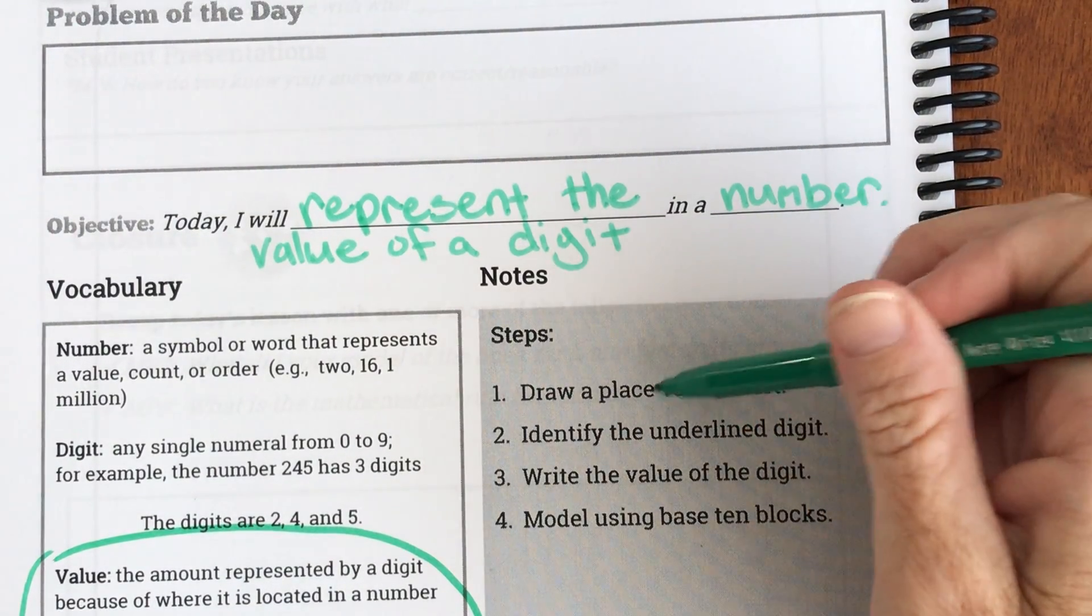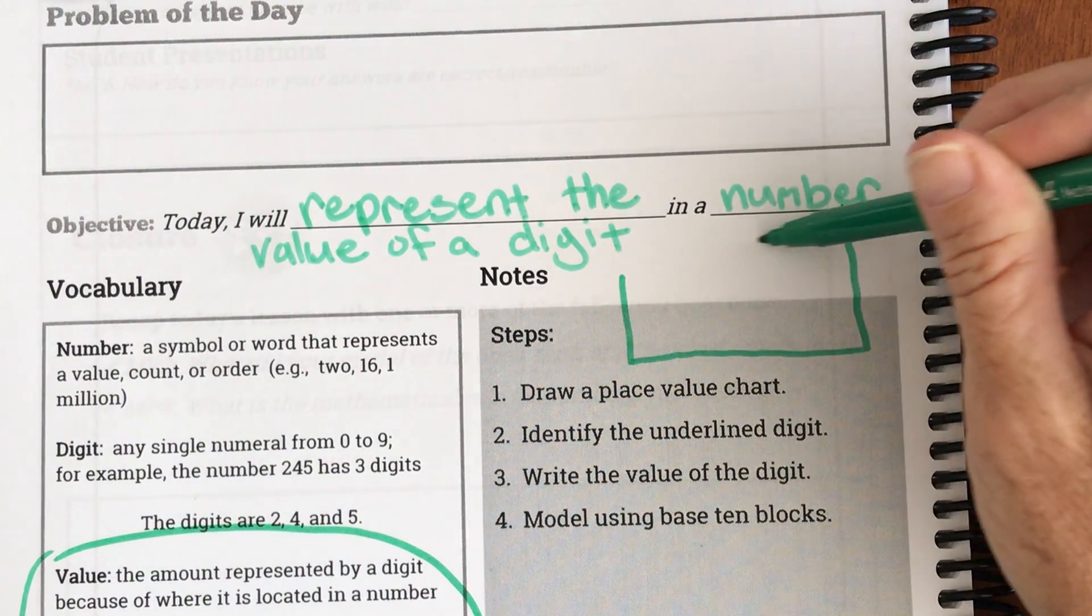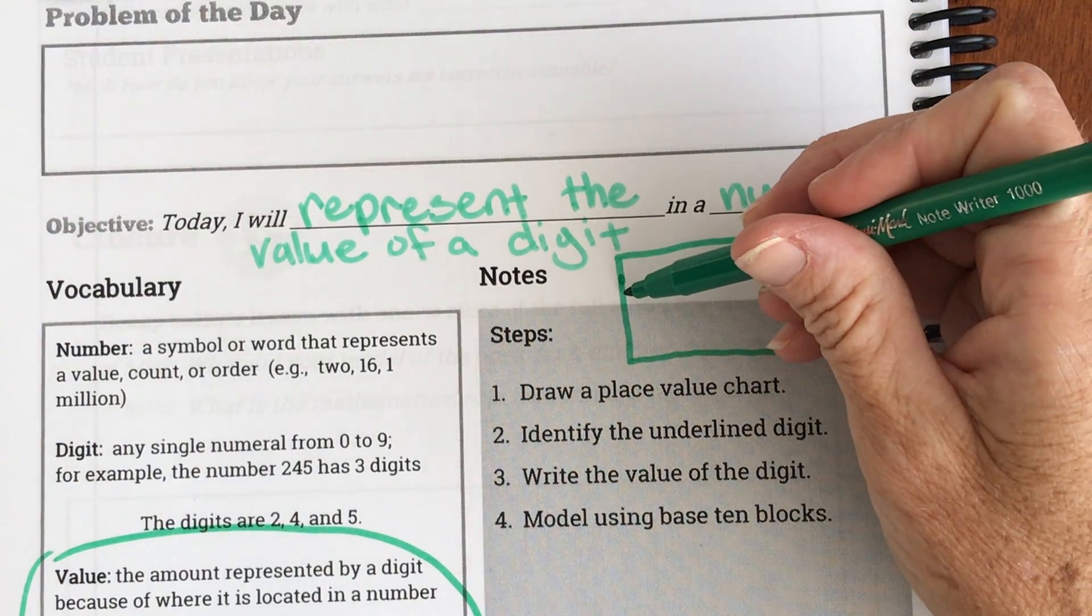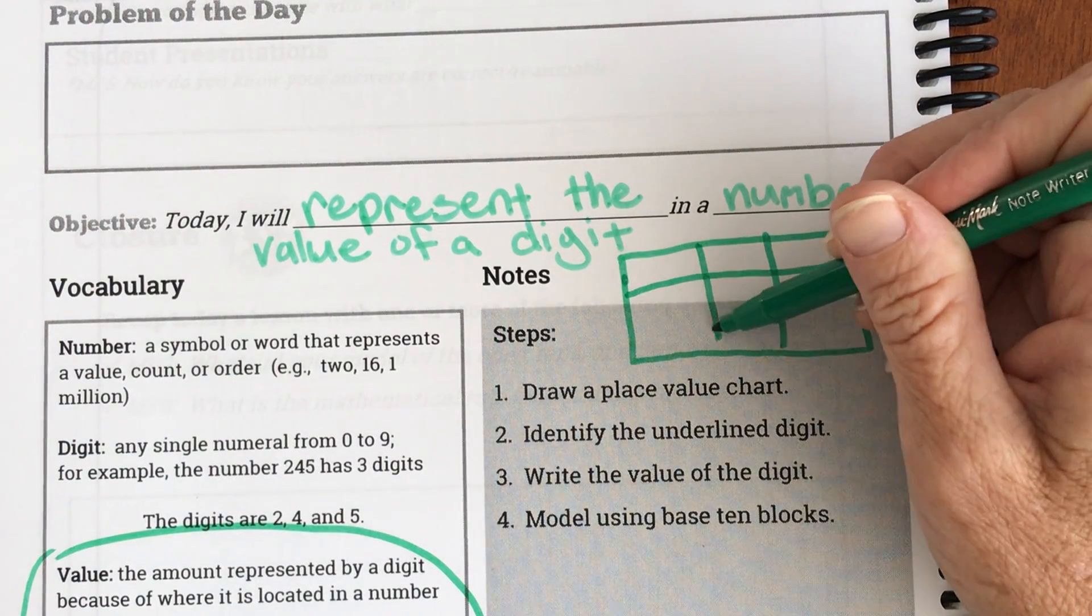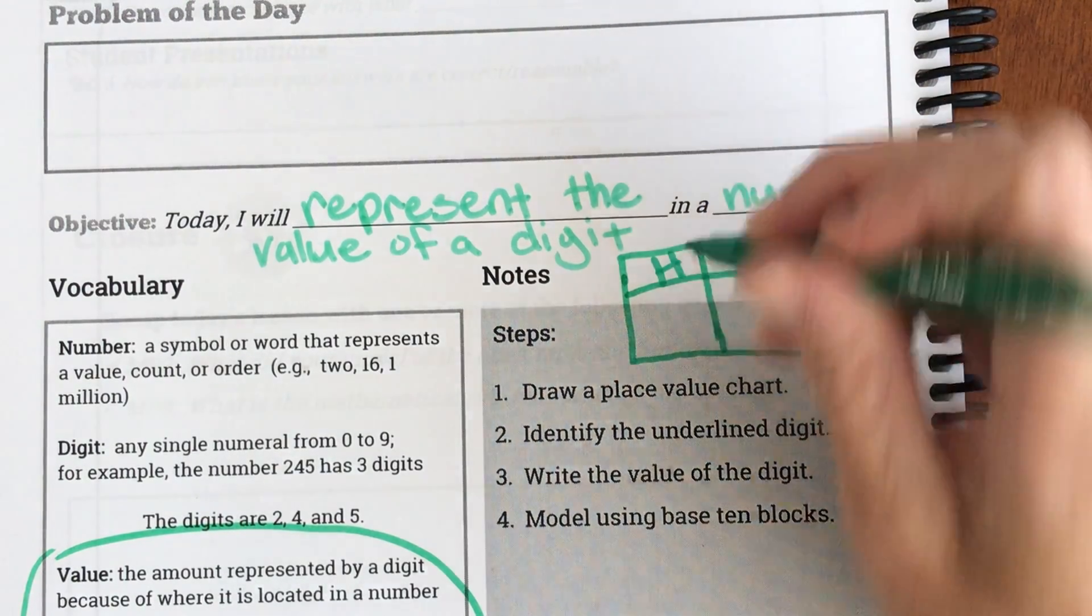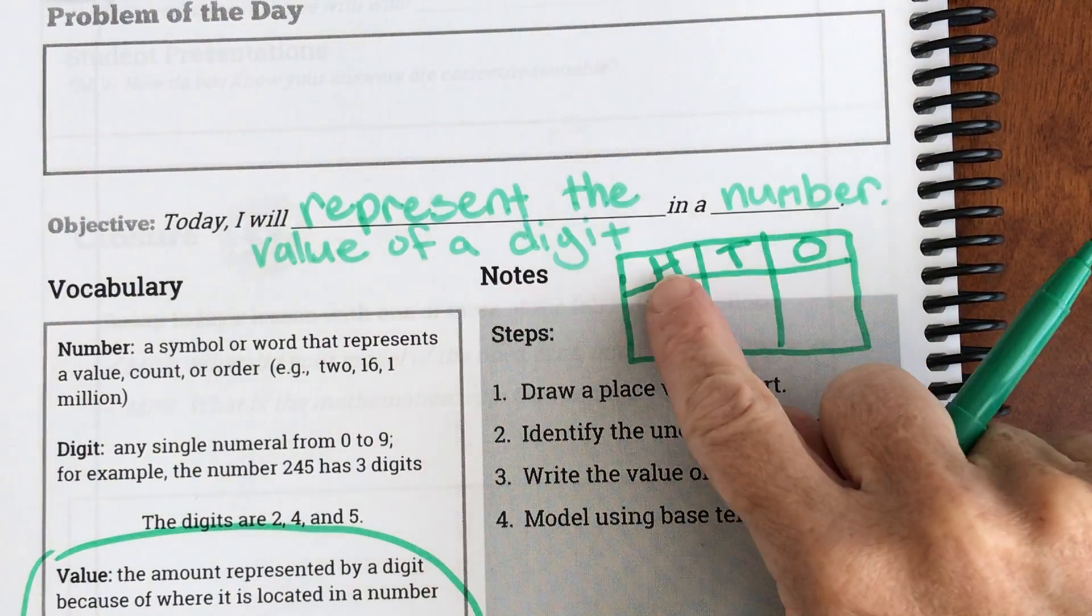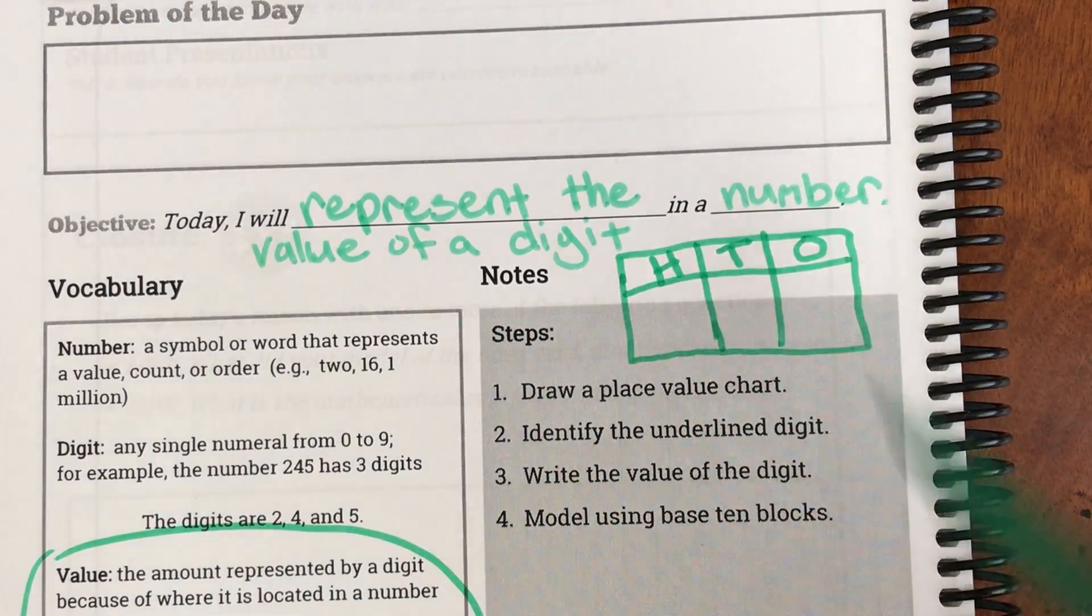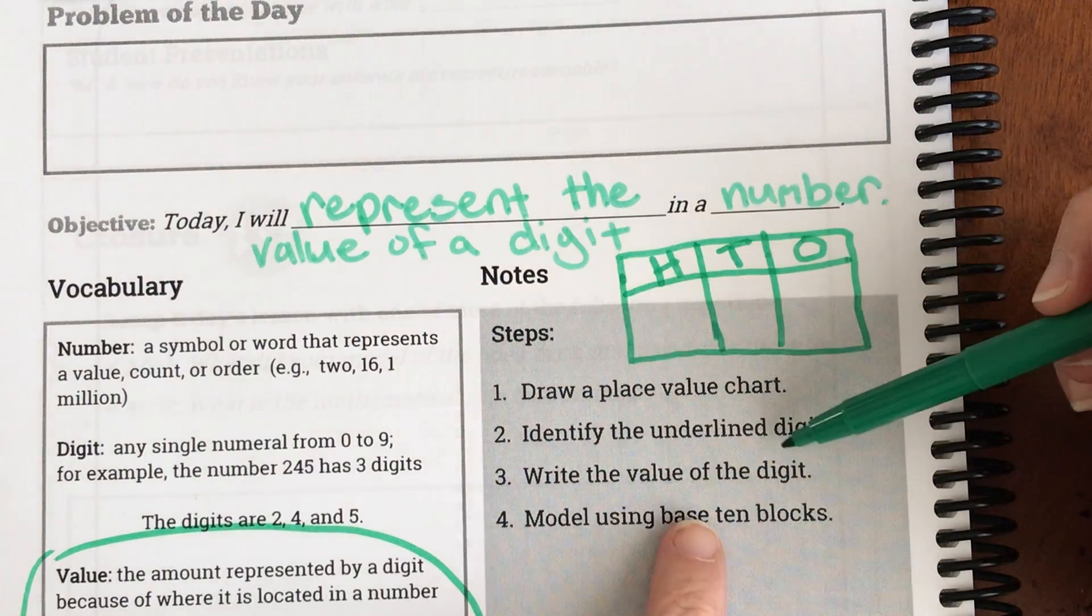For step one when it says draw a place value chart, a place value chart looks like this. And remember if I'm writing in green I want you to write it and I'm going to put a title at the top. So I have ones, tens, and hundreds. That's going to be how I'm going to draw my place value chart: ones, tens, and hundreds. Okay so once you do that then it'll help you underline the digit and know what place value it is to know the value.